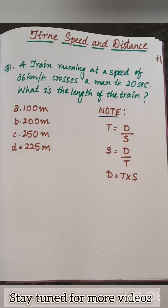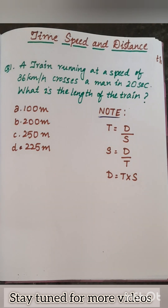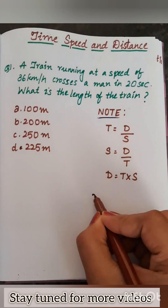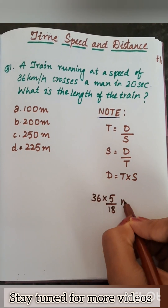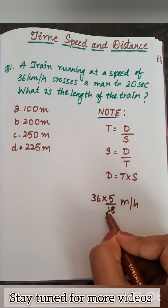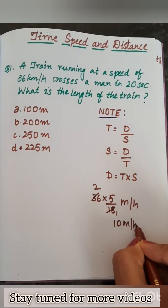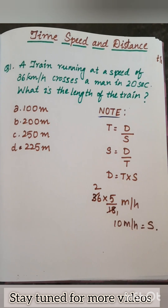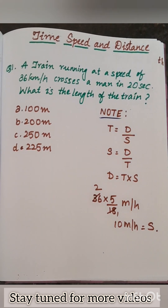We have to note that time is equal to distance by speed, speed is equal to distance by time, and distance is equal to time into speed. They have given speed in kilometers per hour and options are in meters, so I am converting it: 36 into 5 by 18, which gives 10 meters per second. That is the speed of the train.